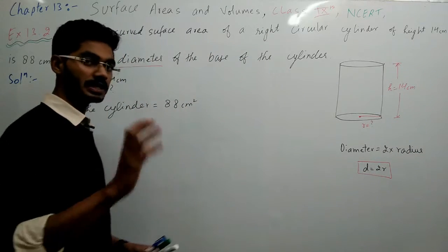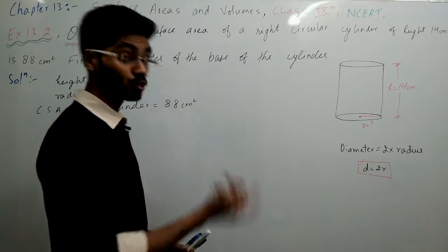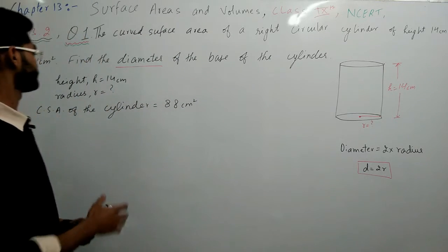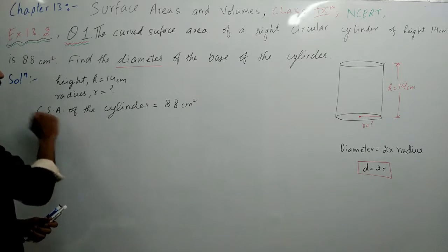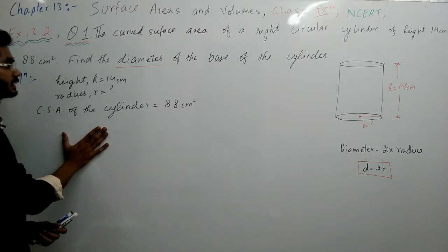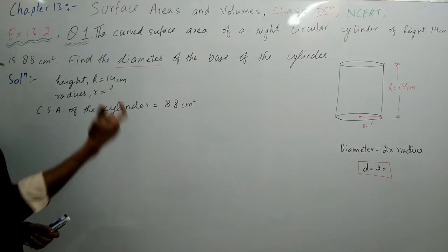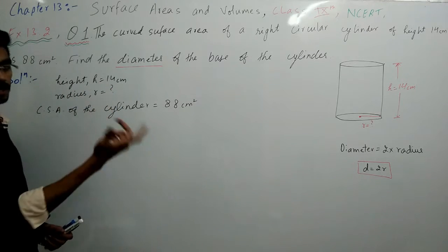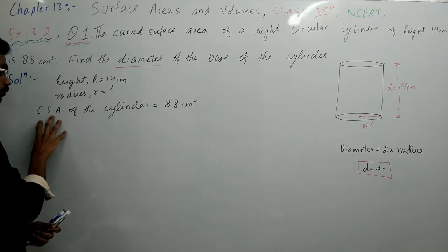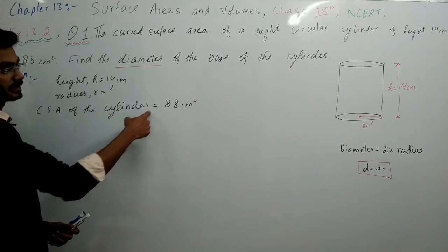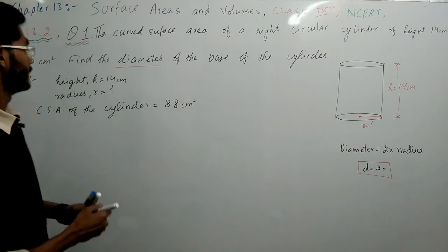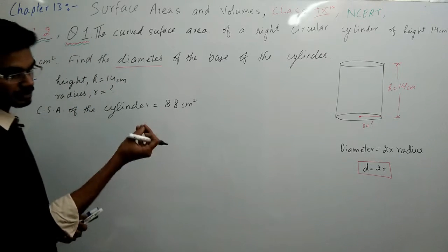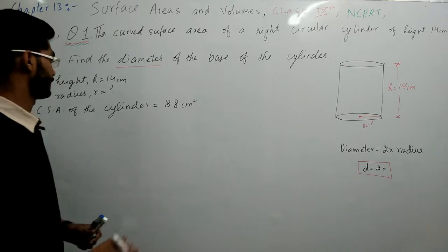To agar haam radius nikal lenge aur usko 2 se multiply kar du, to mujhe diameter mil jayega. Vohi haam karne waale hai. Lekin radius nikalegi kaise? Voh haam nikalegi with the help of curved surface area. Dekho hamei height di hai kitni? 14 centimeter. Radius hamei pata nahi. Lekin hamei unhonne curved surface area of this cylinder de diya and that is 88 centimeter square. To isi ko use karke radius nikal lenge aur usko 2 se multiply karke diameter nikalenge.